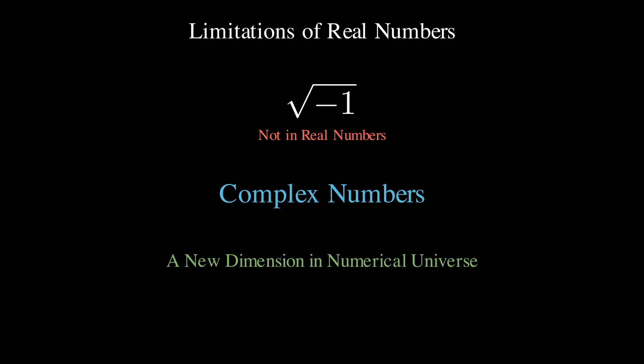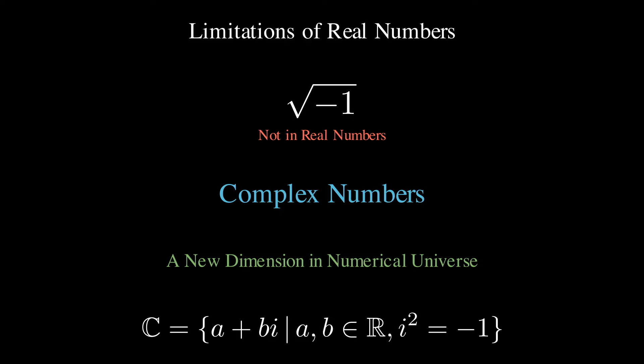These numbers introduce an entirely new dimension to our numerical universe. Quite literally, they're two-dimensional numbers. Complex numbers are formed by adding a real part and an imaginary part, usually denoted as a plus bi, where a and b are real numbers, and i is the imaginary unit defined to be the square root of negative one.